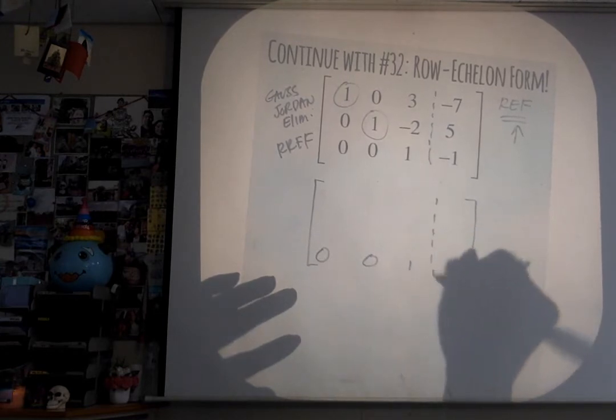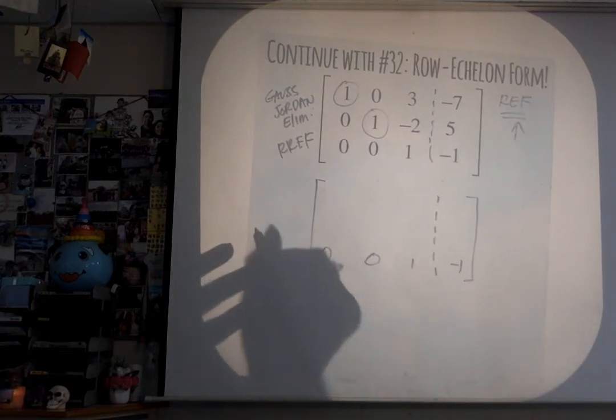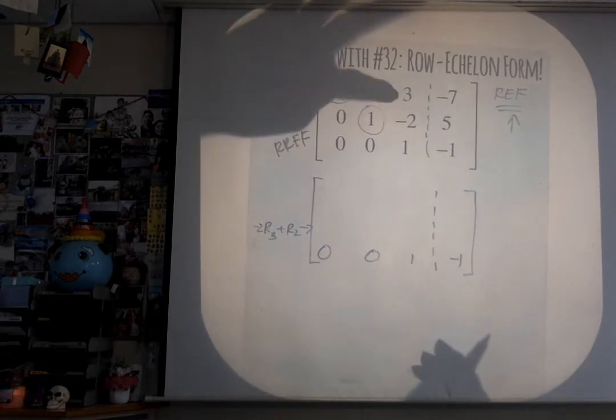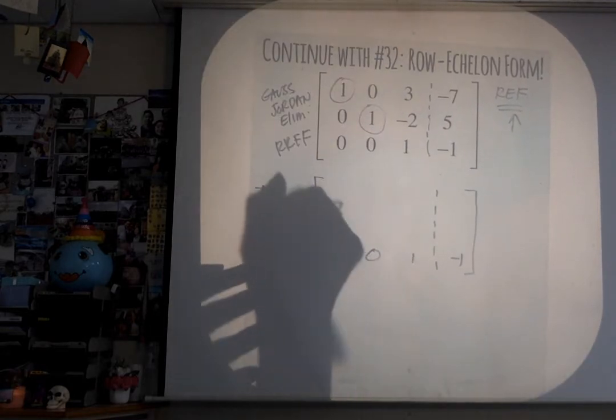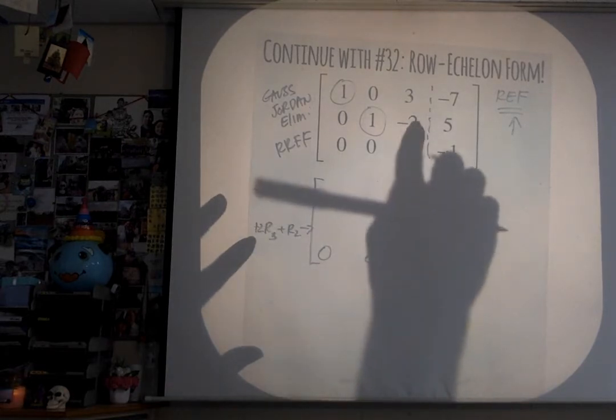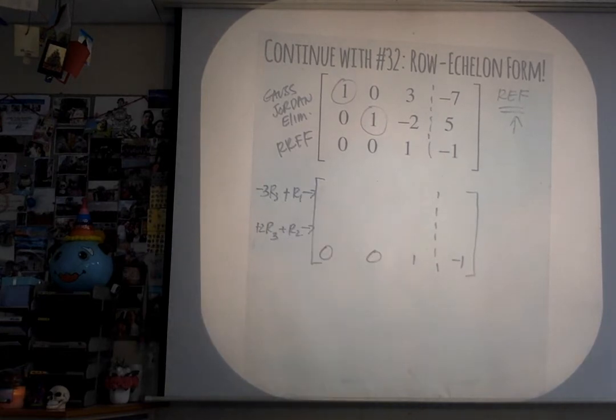We're gonna do something to the last row to get these guys to be zero. Leave the last row alone. Second row, how is it gonna change? You're gonna multiply the third row by negative 2, negative 2R3, and add it to R2 to get R2. This guy, you're gonna multiply this guy by negative 3—I'm sorry, you should multiply this by positive. You need positive to add to zero. Negative R3 and add it to R1.